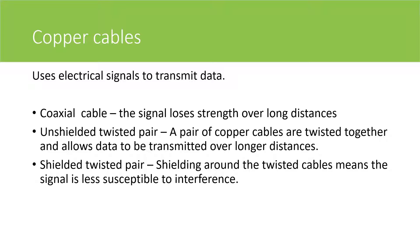There are coaxial cables. However, with coaxial cables the signal loses strength over long distances. Unshielded twisted pair is a pair of copper cables that are twisted together and allow data to be transmitted over longer distances. And also we have shielded twisted pair, where the shielding around the twisted cable means that the signal is less susceptible to interference.